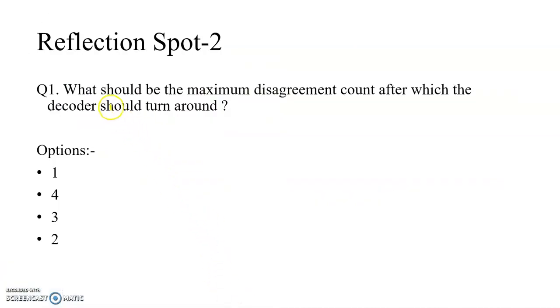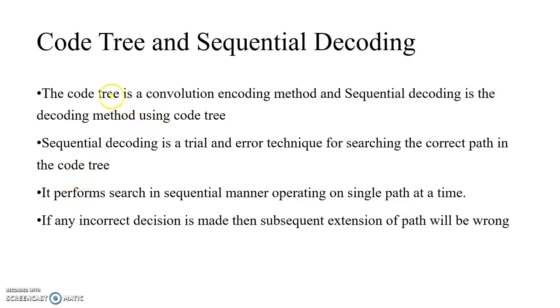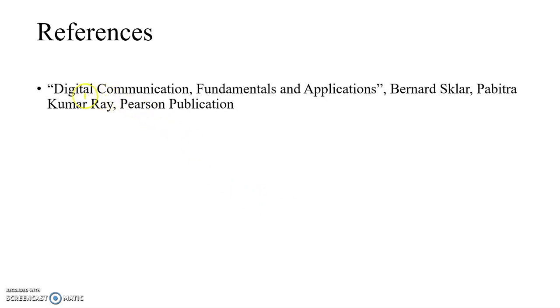The second reflection spot asks: what should be the maximum disagreement count after which the decoder should turn around? The answer is 3 — the maximum disagreement count should be 3, after which we turn around. We have seen the code tree and sequential decoding. Sequential decoding is basically a trial and error method, and we have seen how to find the decoded signal. The reference used is Digital Communication: Fundamentals and Applications by Sklar. Thank you very much.